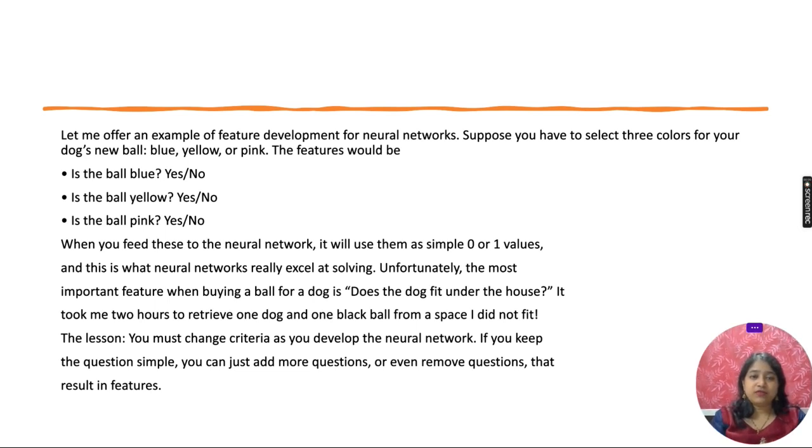Let me offer an example of feature development for neural networks. Suppose you have to select three colors for your dog's new ball: blue, yellow, or pink. Is the ball color blue? Yes/No. Is the ball yellow? Yes/No. Is the ball pink? Yes/No. When you feed these to the neural network, it will use them as simple 0 or 1 values.